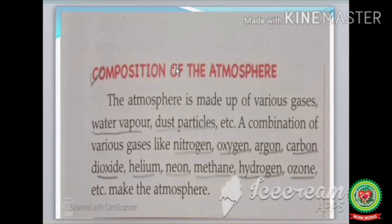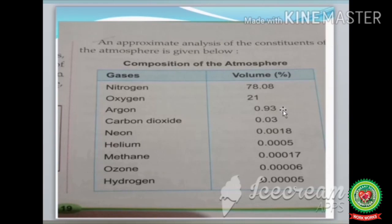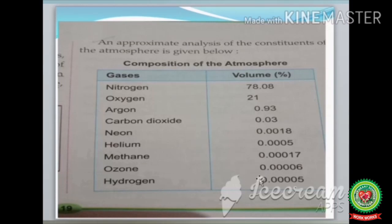The atmosphere is made up of various gases, water vapor, dust particles, etc. The gases include Nitrogen, Oxygen, Argon, Carbon Dioxide, Helium, Neon, Methane, Hydrogen, Ozone, etc. An approximate analysis of the composition is: Nitrogen 78.08%, Oxygen 21%, Argon 0.93%, Carbon Dioxide 0.03%, Neon 0.0018%, Helium 0.005%, Methane 0.00017%, Ozone 0.0006%, Hydrogen 0.0005%.